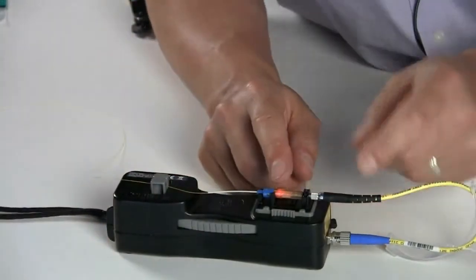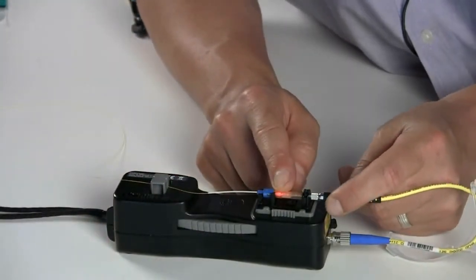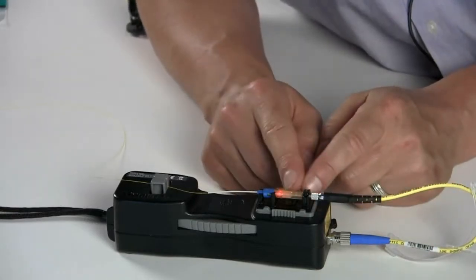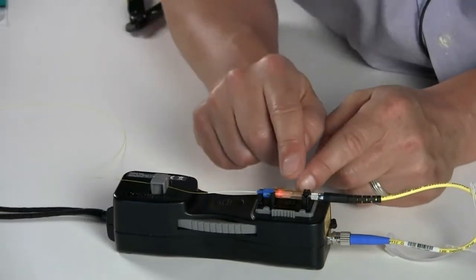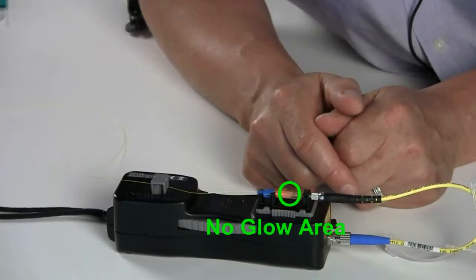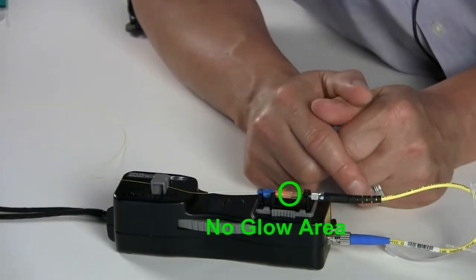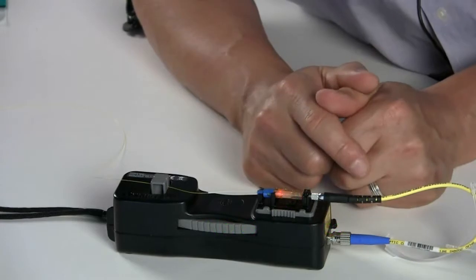Turn on the VFL. Ensure the cord is inserted all the way into the ferrule. And look for the glow in the middle of the connector. There should be very little to no glow in the middle of the connector.